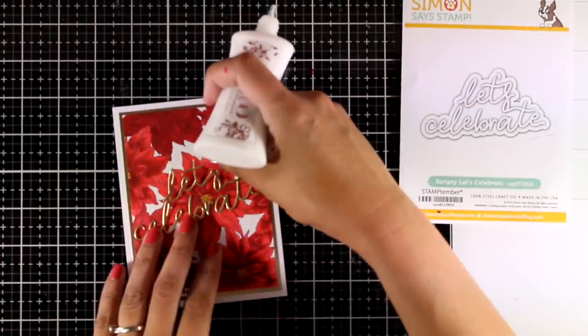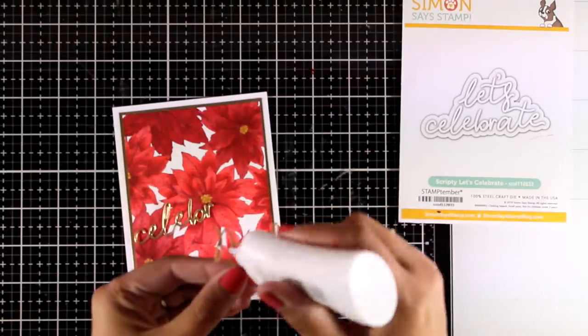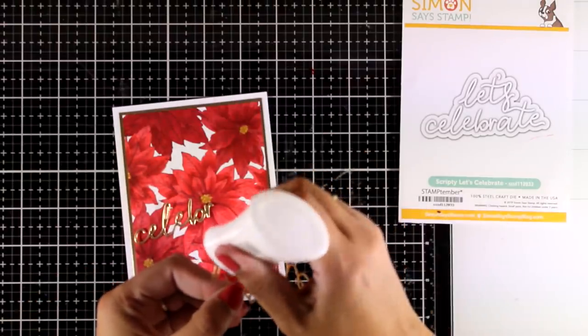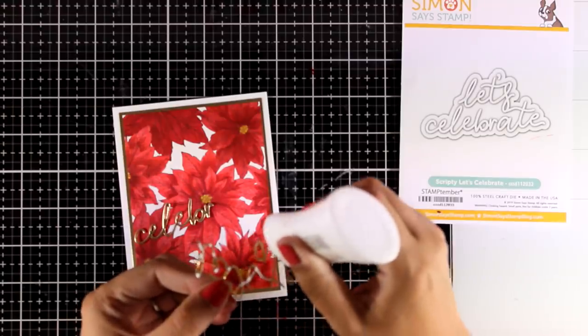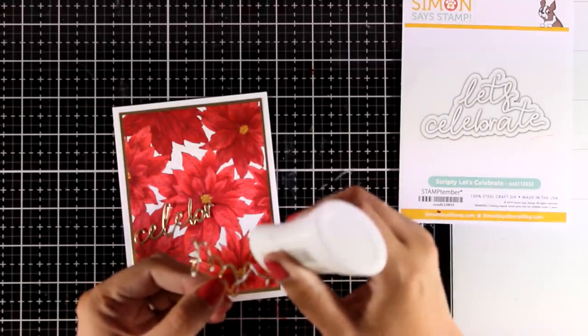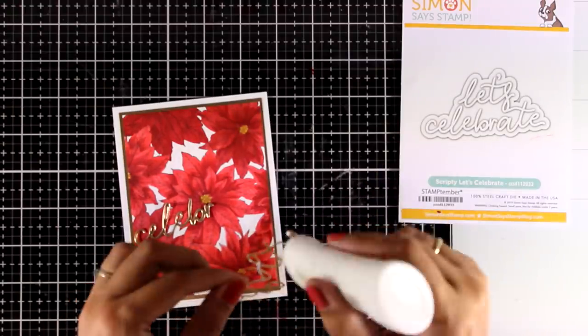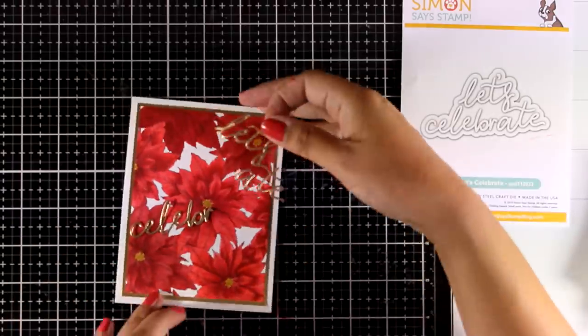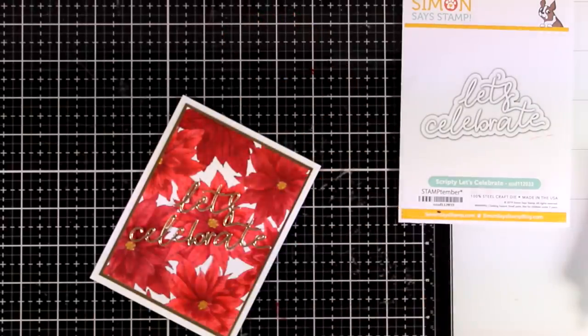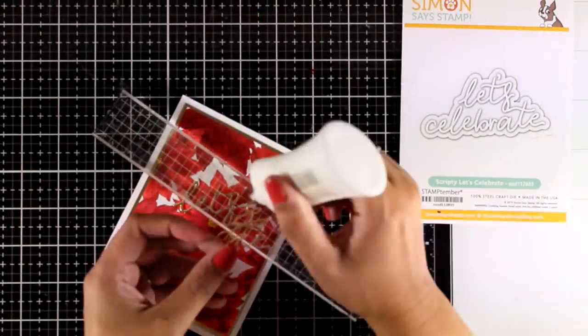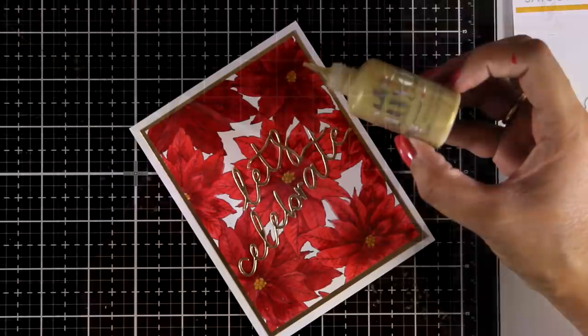And to finish off my card I'm adding the sentiment. This is a cut out using one of the dies from the latest September release and it says let's celebrate. I'm going to stick that with my Nuvo Deluxe glue, and I find that this sentiment is really versatile. You can use it again and again on so many different occasions from Christmas like I'm doing here to even birthdays or anniversaries or celebrating a graduation.